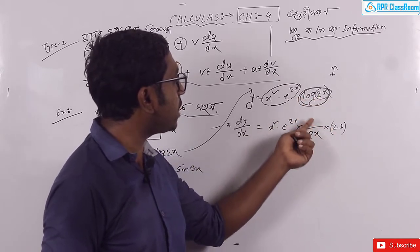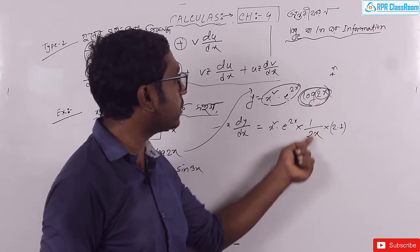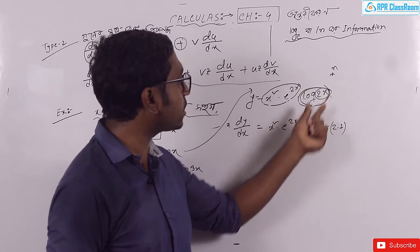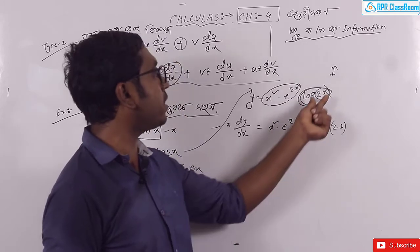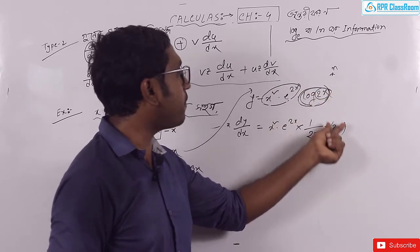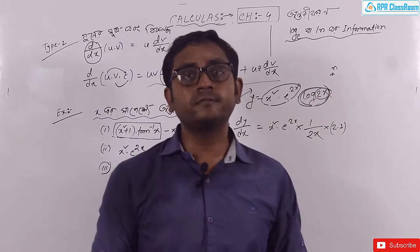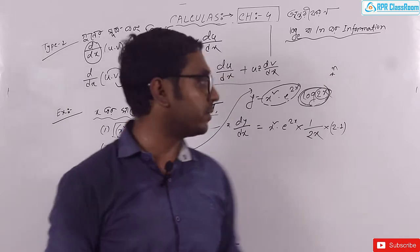One 1 by 2x. Log x is equal to x, 2x will be equal to x. 2e to x is equal to 1.